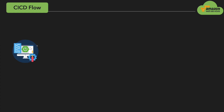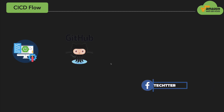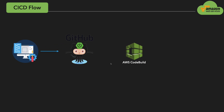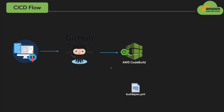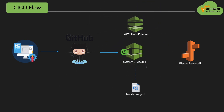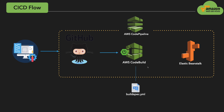Before getting your hands dirty with the demo, let's look at the complete CICD flow and its setup. Initially, we are going to build a simple Spring Boot application, and once we have done that, we push this application code into a new GitHub repository. Once we have that, we need to build a CodeBuild project. This CodeBuild project needs a buildspec YAML file from our application code. Then we need to build an Elastic Beanstalk environment, because before we build the AWS CodePipeline, we should have our environment where we are going to deploy our applications, so we know the environment name to configure in AWS CodePipeline.